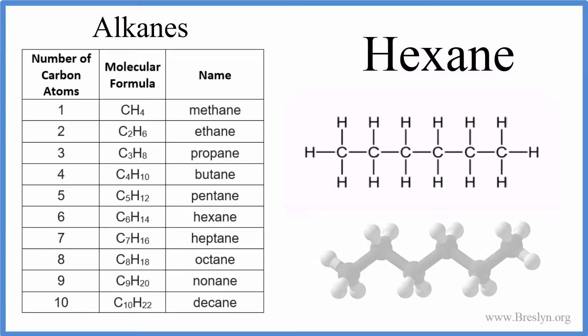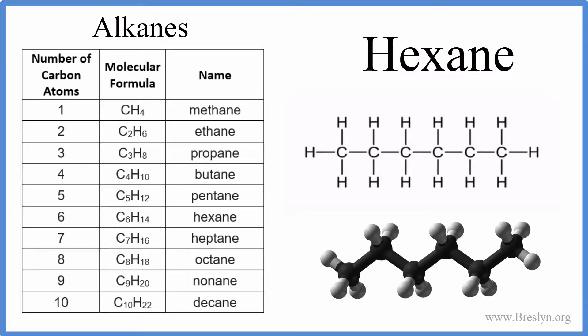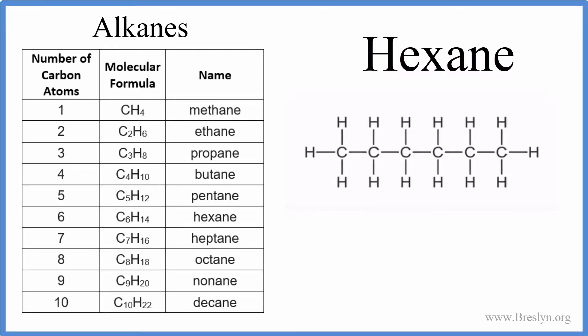We can also look at the three-dimensional structure for hexane. The black, those are the carbon. The white, those are the hydrogen. So we have the six carbons surrounded by the hydrogens with single bonds, and the molecular geometry in respect to each of the carbons is tetrahedral.